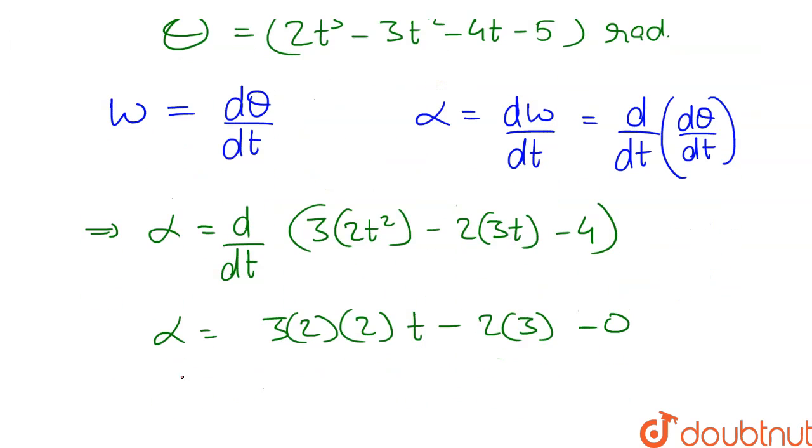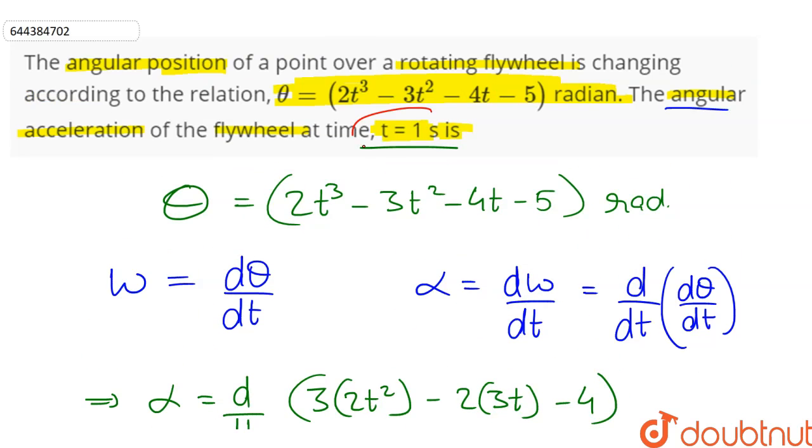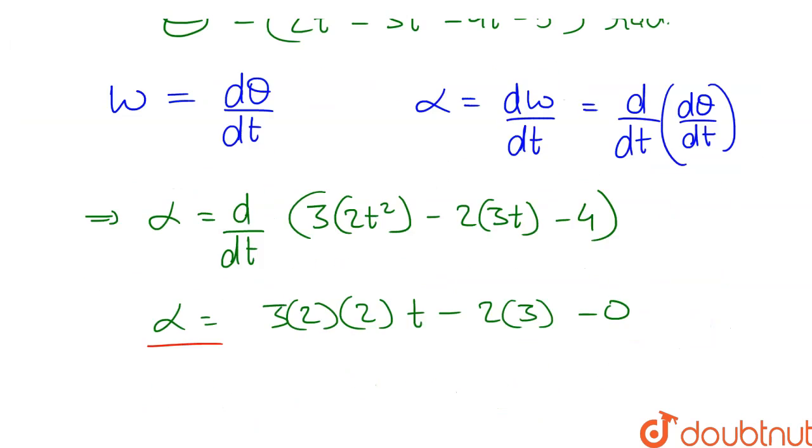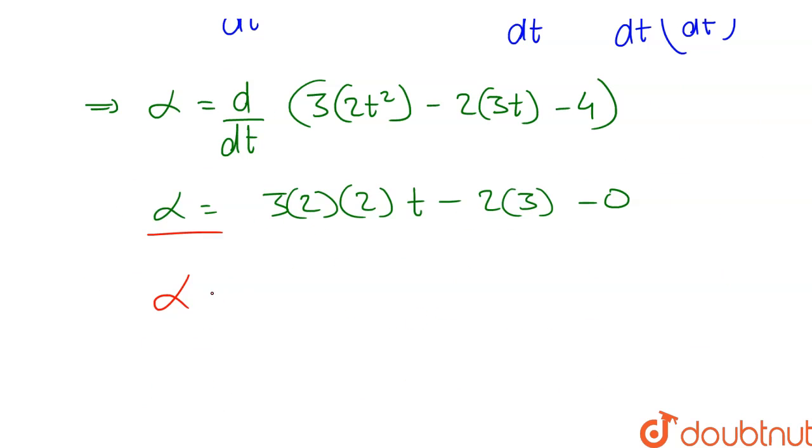So now that we have the relation of angular acceleration, let's put the value of time t equal to 1 second. So alpha will be equal to 3 into 2 into 2 into 1 minus 2 into 3.